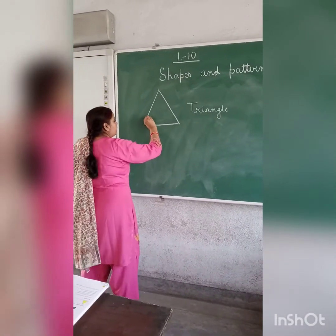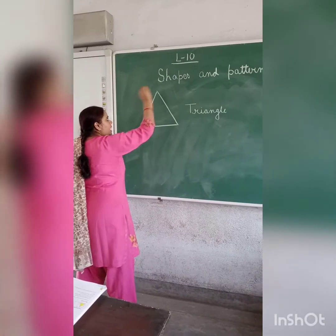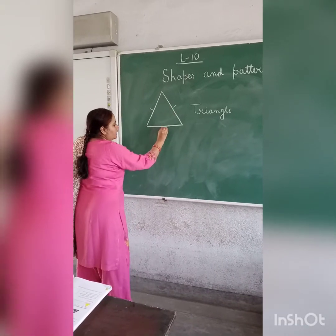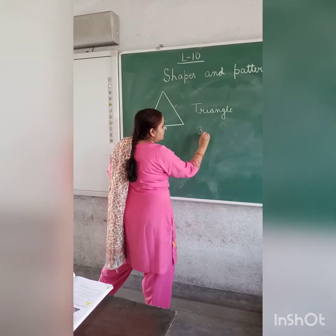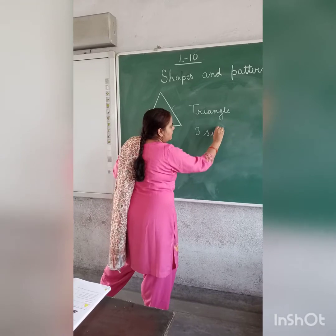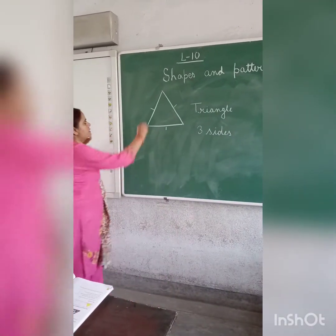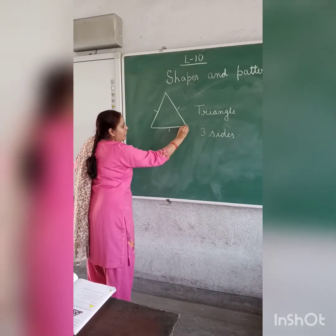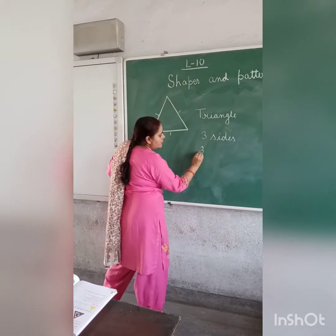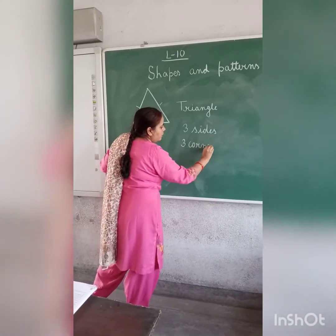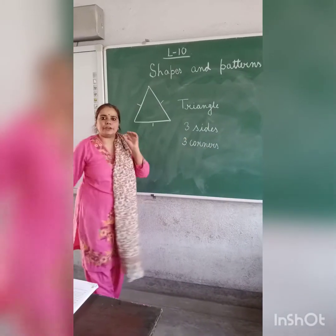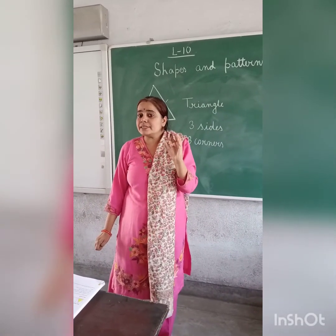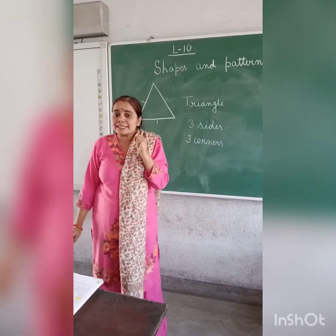See children, this one is the side of the triangle. How many sides are there? 1, 2, and 3 — there are 3 sides. Now, corners. These are corners: 1, 2, and 3. How many corners are there? 3 corners. Can you give me some examples of triangles in your real life? Have you seen a triangle somewhere?